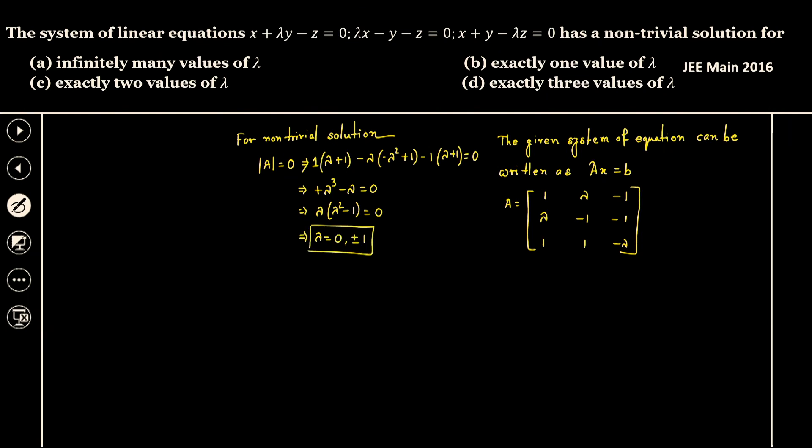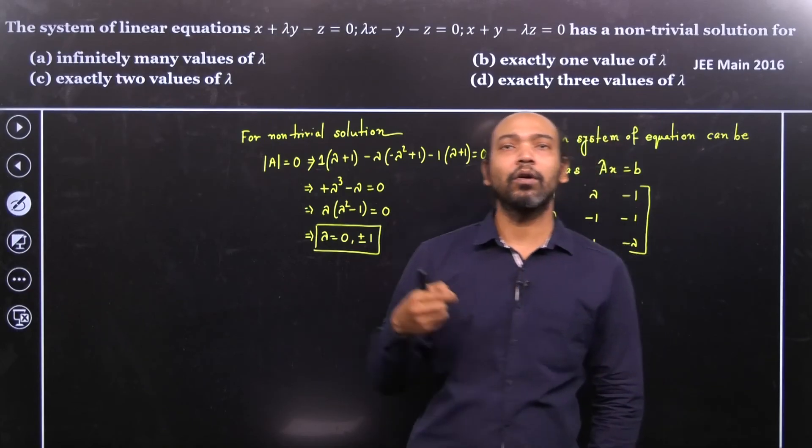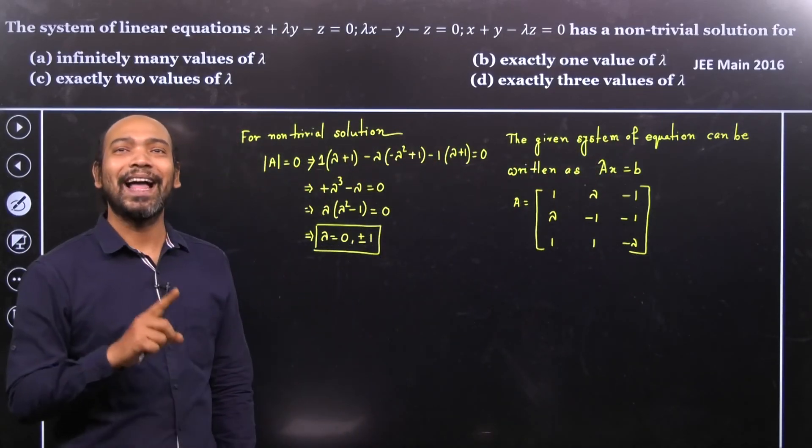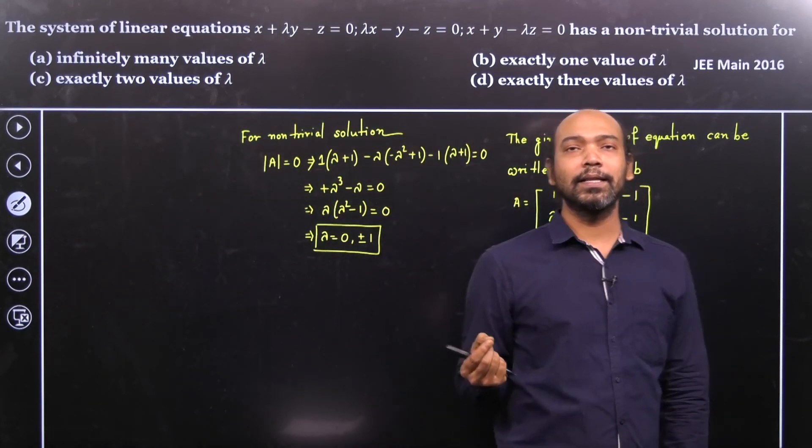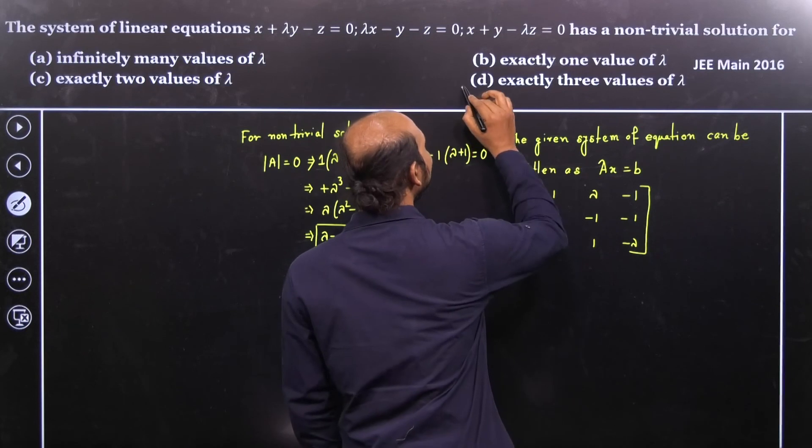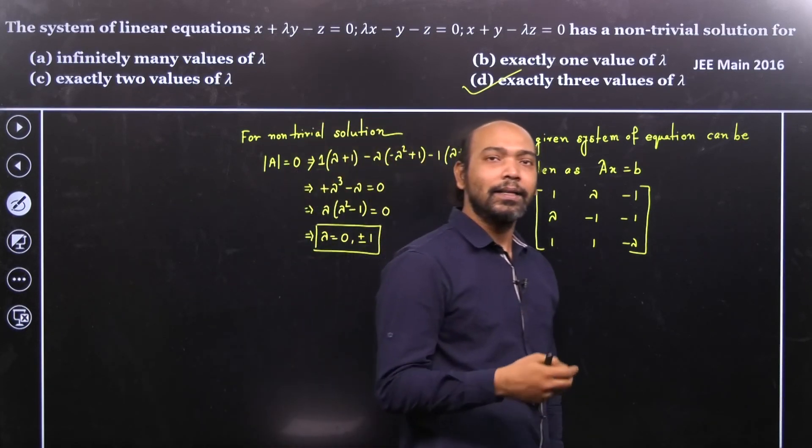So therefore, if we have lambda equal to zero, plus one, or minus one, then only the system of equations have a non-trivial solution. So therefore the final answer is very simple: we have exactly three values of lambda so that the given system of equations are having a non-trivial solution.